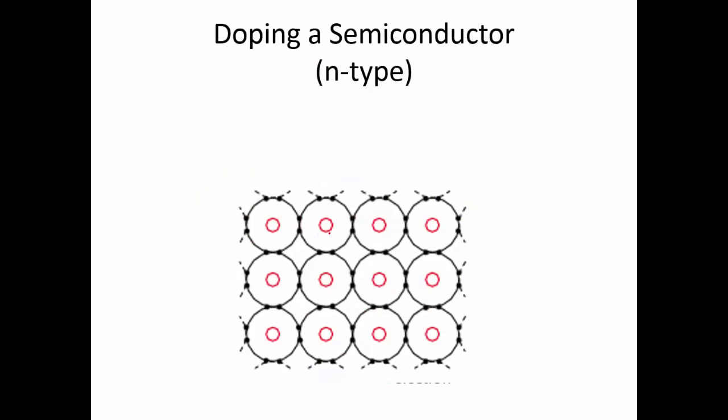So doping a semiconductor is the process of adding an impurity to the semiconductor to make it into a better conductor. This is done to create the devices that actually do interesting things — semiconductor devices like diodes and transistors require taking an intrinsic semiconductor and adding an impurity to it. One type of impurity creates an n-type extrinsic semiconductor. With an n-type dopant, let's say all of these are silicon atoms — a number of these silicon atoms would be replaced by a phosphorus atom.